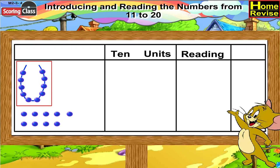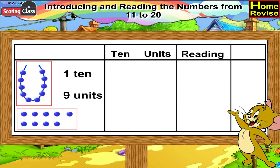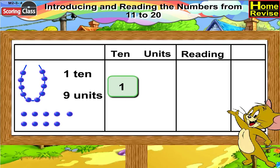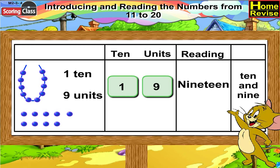We have a string of ten beads and nine extra beads. So under tens you will write one, and under units, yes, nine. So we will read it as nineteen, ten and nine.